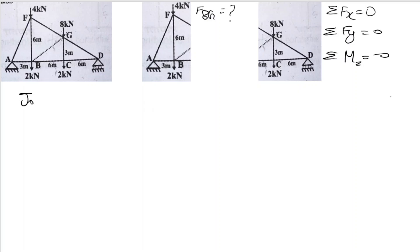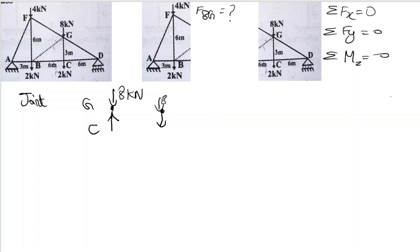This is very important — whether the member is compressive or tensile. Suppose there is one joint, joint G, with a load of 8 kN acting on it. If the load is compressing this member, then it is a compressive member.